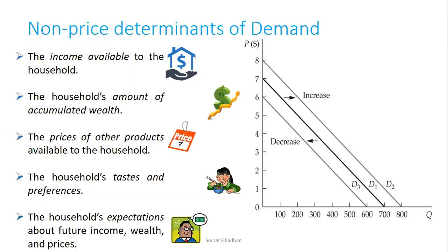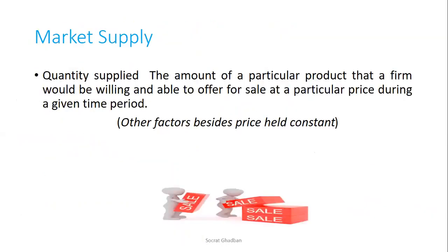Another factor is the household's expectations about future income, wealth, and prices. If consumers expect prices to decrease in the future, they will decrease their current demand in order to benefit from lower future prices, resulting in a shift in demand from D1 to D3.